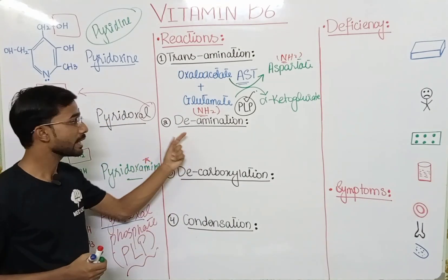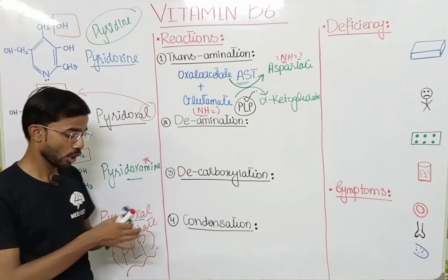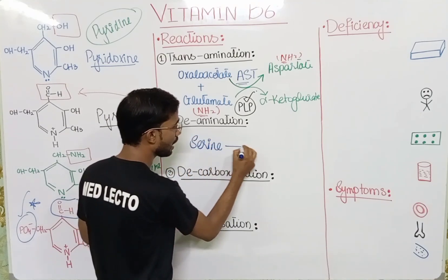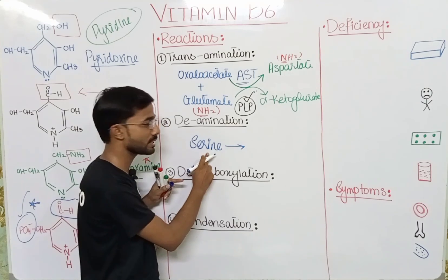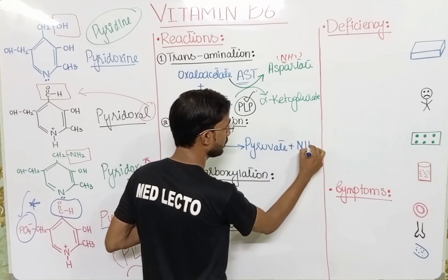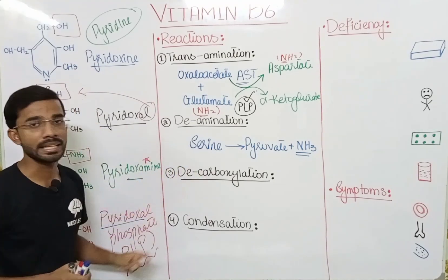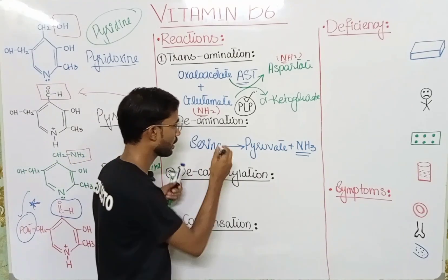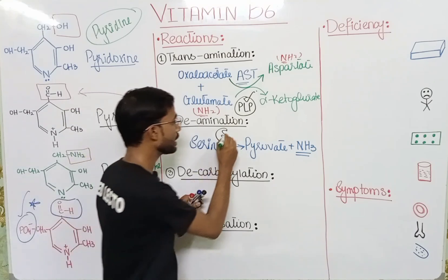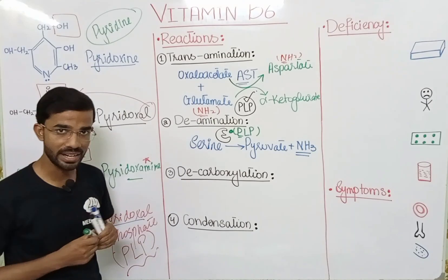Next is deamination. 'De' means removal — removal of the amino group is called deamination. For example, serine undergoes deamination: after removing the amino group from serine, it will convert into pyruvate, along with the release of ammonia. Again in this reaction, the coenzyme will be PLP — Pyridoxal phosphate.